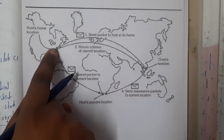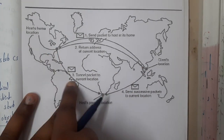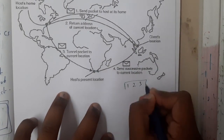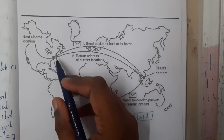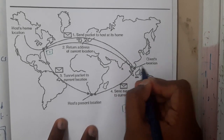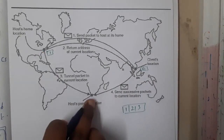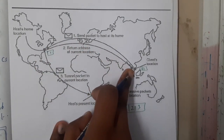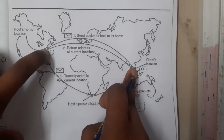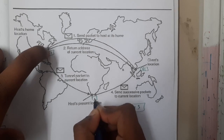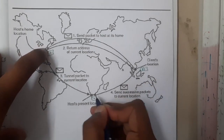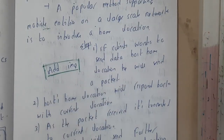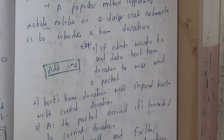Once the client receives the current address, it continuously sends the continuation packets directly to that new location. For example, assume packets one, two, and three need to be sent. Packet one is sent to the home location first. That packet is then tunneled to the current location. Packet one successfully reaches the new location, and the remaining packets are sent directly there rather than going through the home location. This process is the home-based approach.